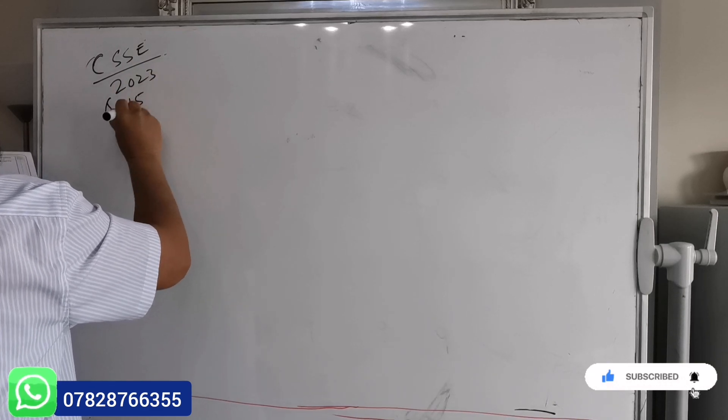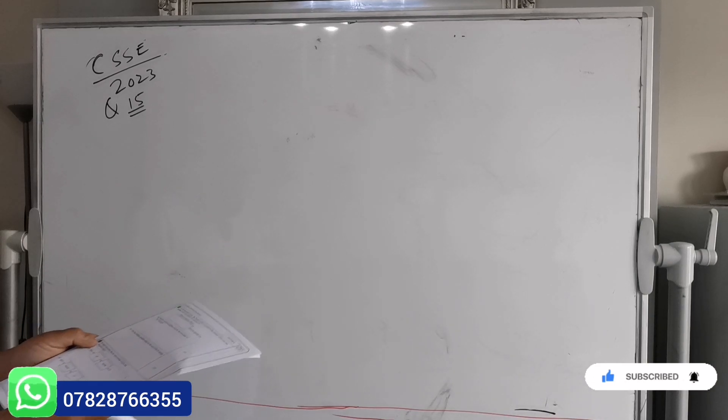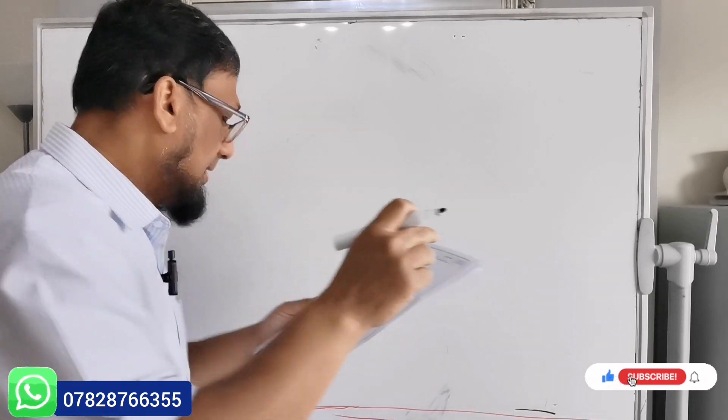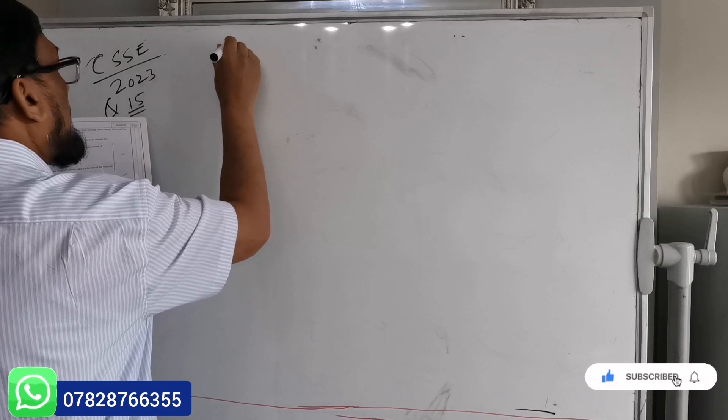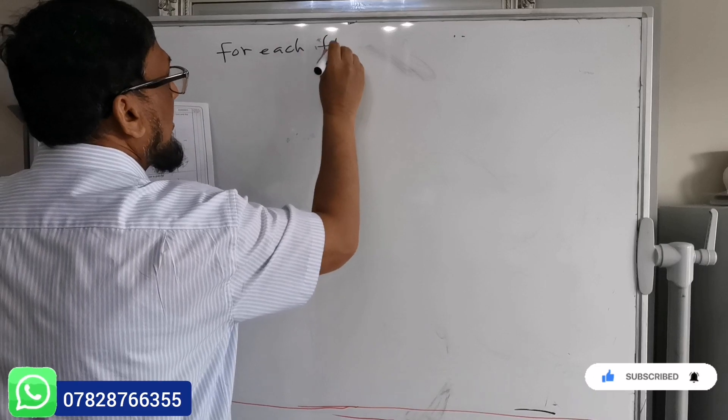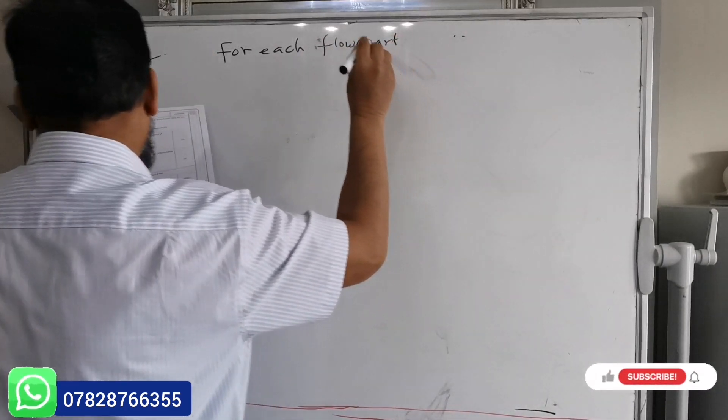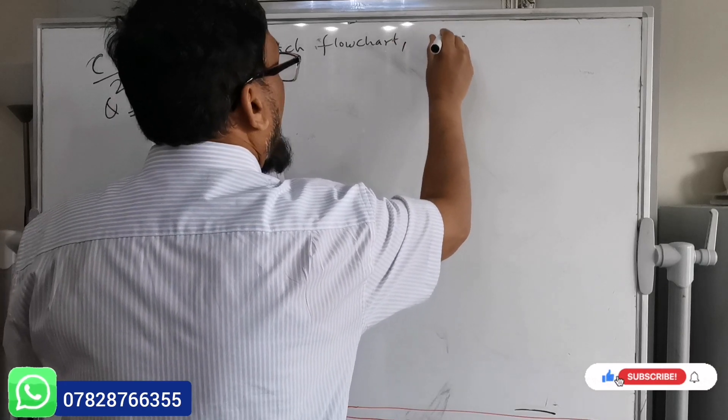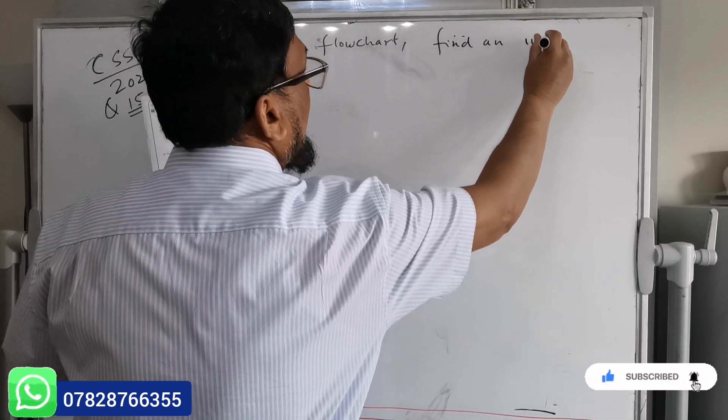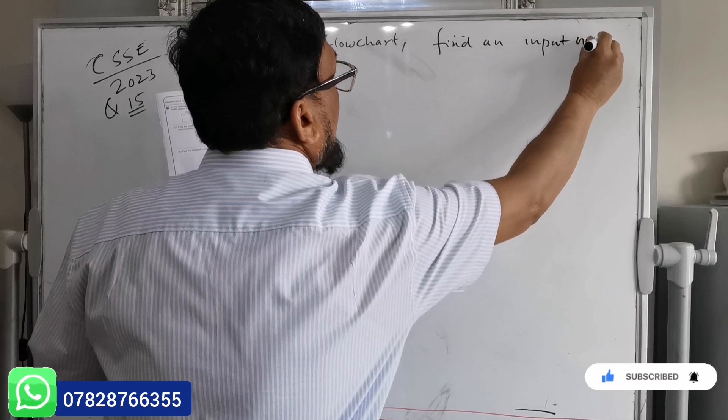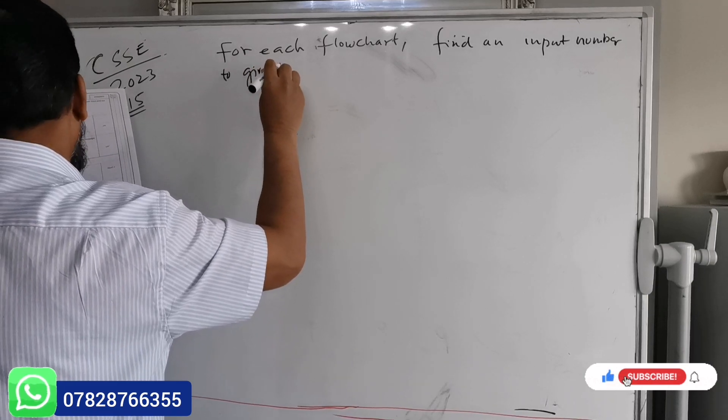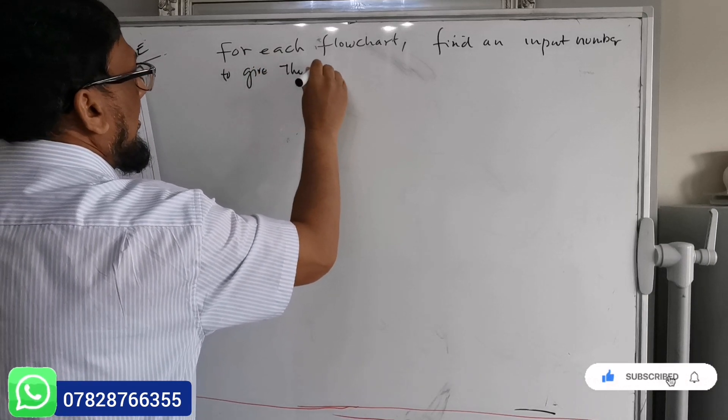Question number 15 says: for each flowchart, find an input number to give the required output. So they give you a flowchart and you need to find an input number to give the required output.